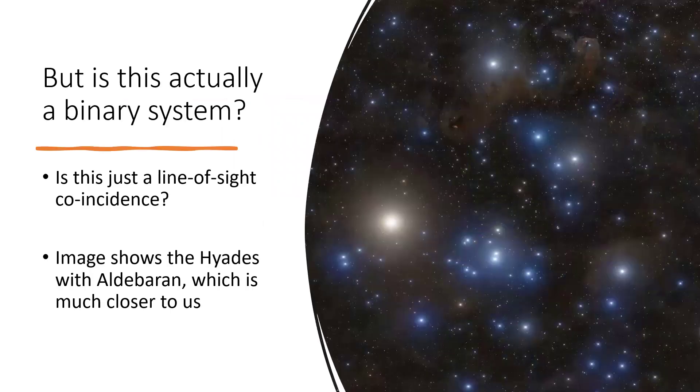So it could just be a coincidence, it could be a line of sight problem. We have that here. This is the Hyades cluster in Taurus. And the blue and white stars that you can see there making up that V shape, the shape that corresponds to the face of Taurus the bull, are part of the Hyades star cluster, about 600 light years away.